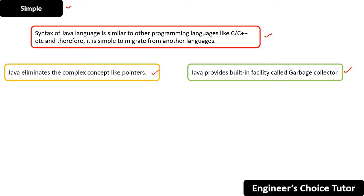The third reason is that Java provides a built-in facility called garbage collector. The garbage collector collects unused memory space to improve the performance of Java-based applications. Java garbage collection is an automatic process that plays a key role in memory management.